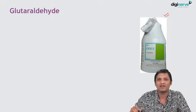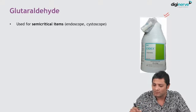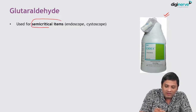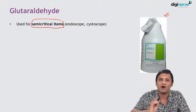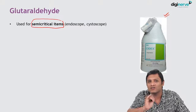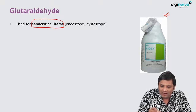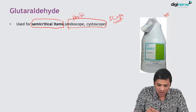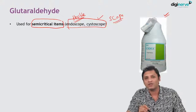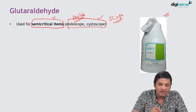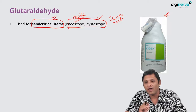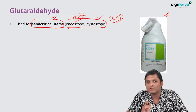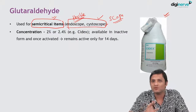Glutaraldehyde is commercially available as Cidex. It is used for the disinfection of semi-critical items. Glutaraldehyde is the most common disinfectant used for semi-critical items like scopes — all kinds of scopes including flexible endoscopes, cystoscopes, and laryngoscopes. These are items which enter sites where normal flora is expected to be present, and glutaraldehyde is the disinfectant of choice for those scopes.